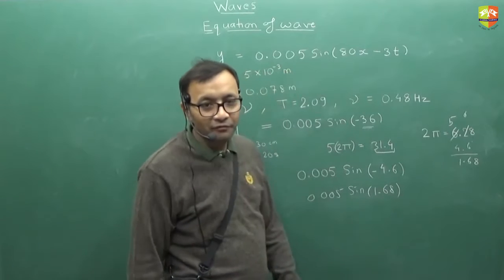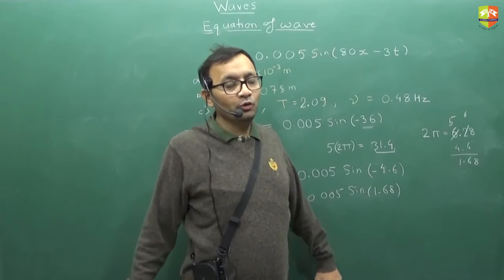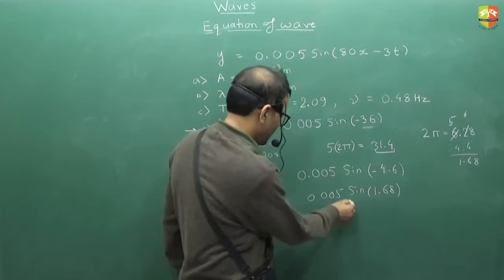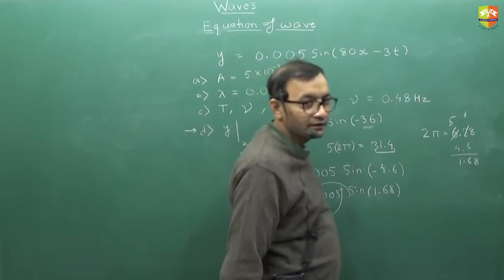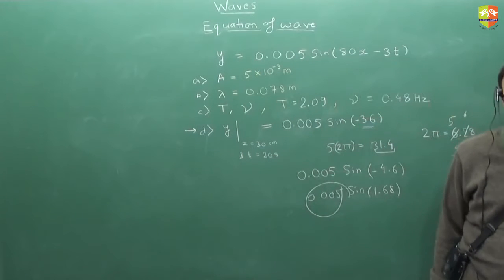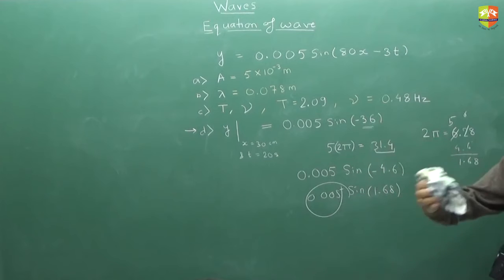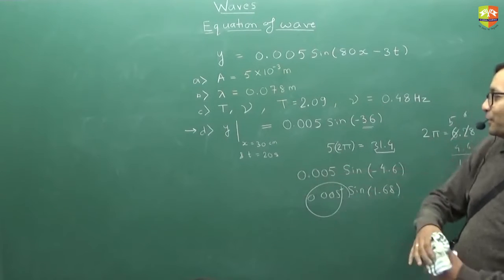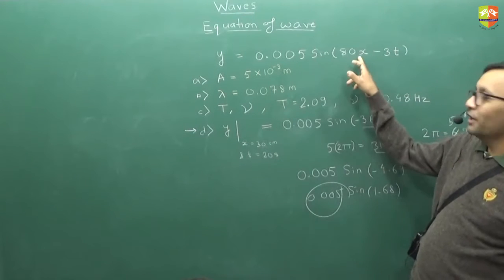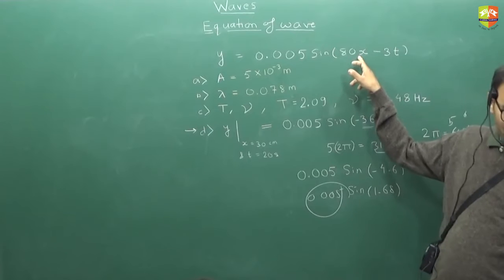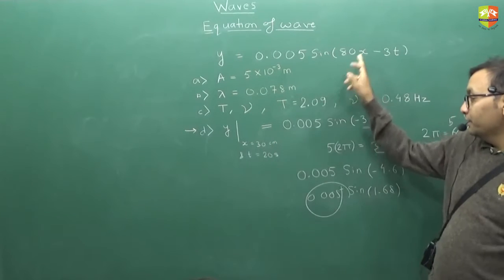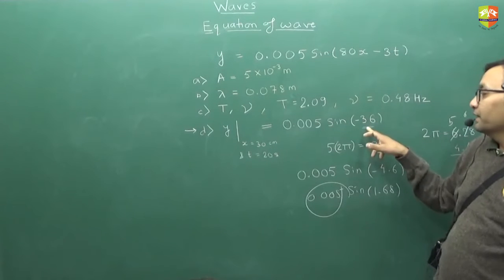So this is 0.005 sine of 1.68. 1.6 is roughly pi by 2. So this is 0.005 the answer. Put the value of x as 0.3 over here. This should be meters. So x I'm putting 0.3, t as 20. You'll get minus 36.